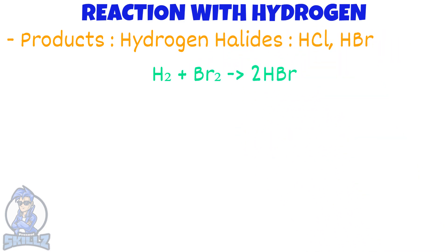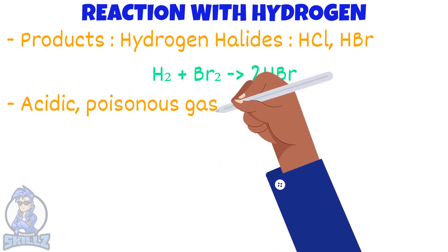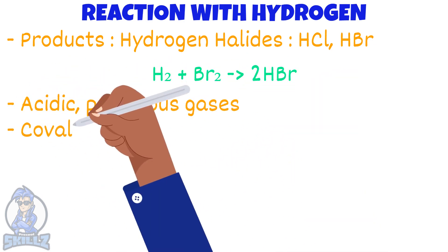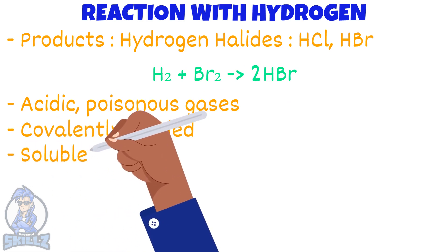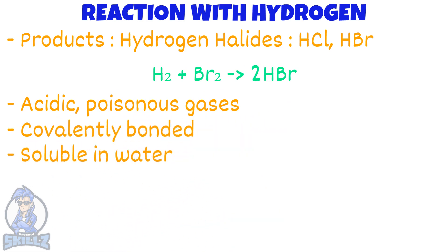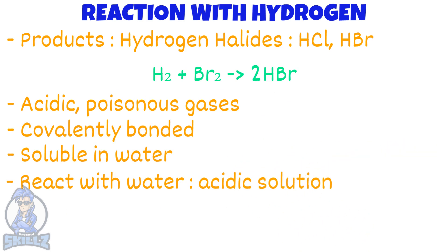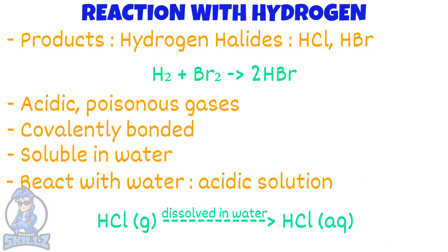Hydrogen halides are acidic, poisonous gases and are covalently bonded. Hydrogen halides are soluble in water and they react with it to form acidic solutions. For example, if hydrogen chloride is dissolved in water it forms hydrochloric acid.